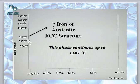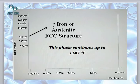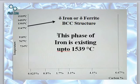If we are heating iron above 767 degrees to reach 910 degrees, the phase of iron obtained is gamma iron, also called austenite, having a face-centered cubic (FCC) structure. This FCC austenite phase is obtained up to 1147 degrees. Above 1147 degrees, we obtain delta iron, also called delta ferrite, which again has a BCC structure.